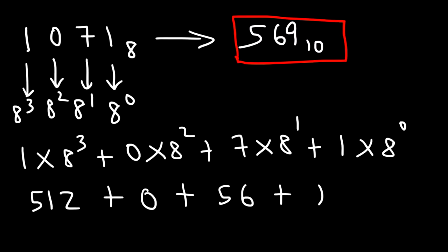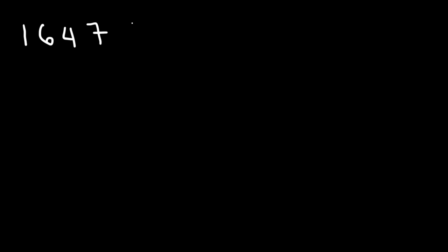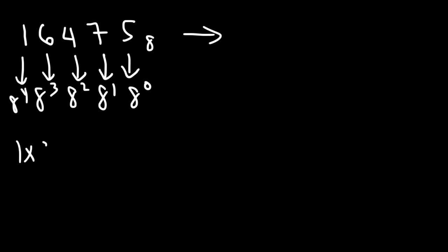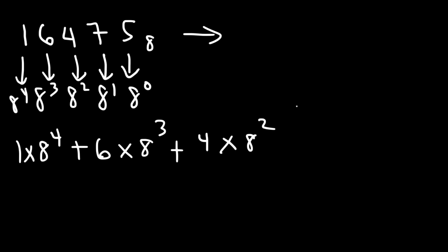Now what about 16475 in the octal system? Let's convert it to a decimal number in the base 10 system. The 5 we're going to multiply by 8 to the 0, the second number by 8 to the 1, the third by 8 squared, the fourth by 8 cubed, and the last one by 8 to the fourth. So this is going to be 1 times 8 to the fourth plus 6 times 8 cubed plus 4 times 8 squared plus 7 times 8 to the first power plus 5 times 8 to the 0 power.